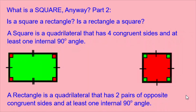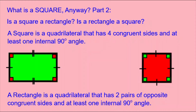A rectangle is a quadrilateral that has two pairs of opposite congruent sides and at least one internal 90-degree angle — very similar to the square, but it doesn't have to have four congruent sides. Therefore, a rectangle is not necessarily a square, because it doesn't necessarily have four congruent sides. A square, though, is a rectangle, because a square has at least one internal 90-degree angle, and yes, you can say it has two pairs of opposite congruent sides — even though all four sides are congruent. So the answer is: is a square a rectangle? Yes. Is a rectangle a square? Usually, no.